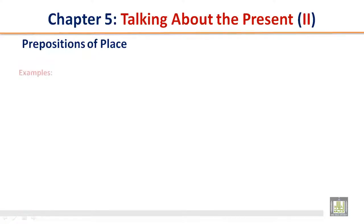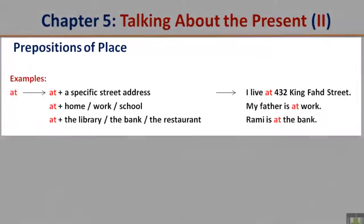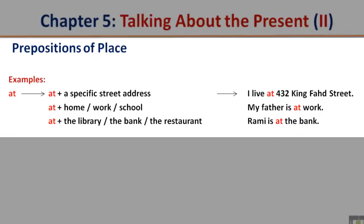Prepositions of Place. Examples: At plus a specific street address. I live at 432 King Fahad Street. At plus home or work or school. My father is at work. At plus the library, the bank, the restaurant. Rami is at the bank.